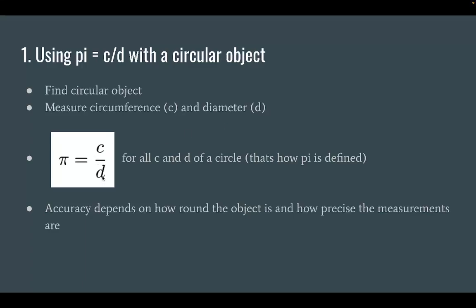You use the c over d formula shown here. And the accuracy depends on how round the object is. So if it's really rough, then you might get an incorrect estimate. And it also depends on how precise your measurements are.